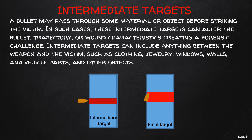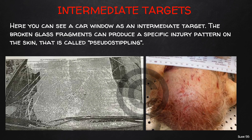Another important topic is the presence of an intermediate target. A bullet might pass through some material or object before striking the victim, and these intermediate targets can alter the bullet, its trajectory, or wound features, creating a real forensic challenge. Intermediate targets can include anything between the muzzle and the victim — clothing, jewelry, windows, walls, doors, vehicle parts, or any other object. For example, a car window as an intermediate target can cause broken glass fragments to produce a specific injury pattern called pseudo-stippling.